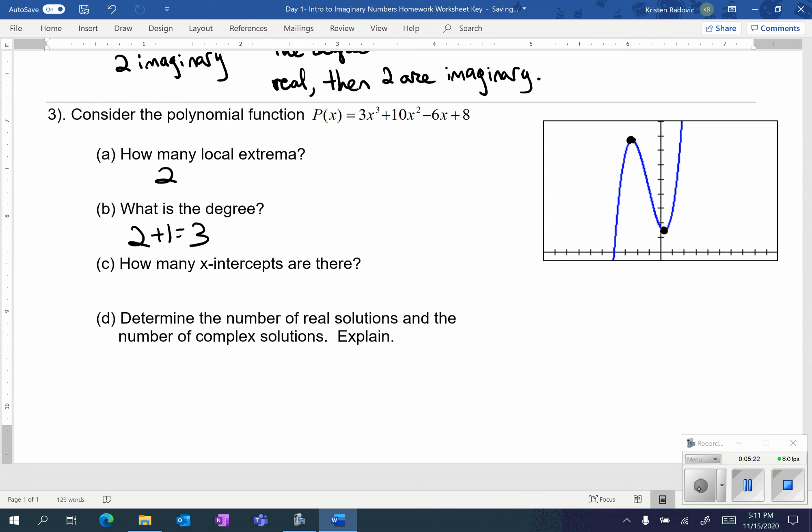That makes sense because it is an odd number, which means odd degrees have arrows going in the opposite direction, which this graph has. It also makes sense because my largest exponent is three as well. So that's another way to confirm to make sure that you have the proper degree.